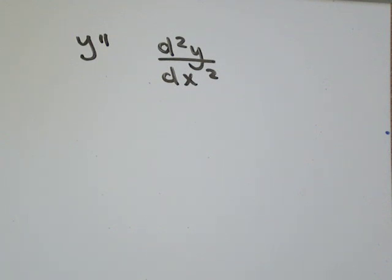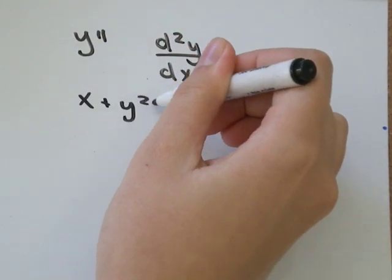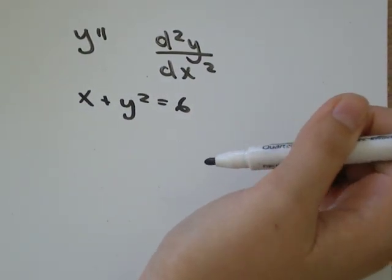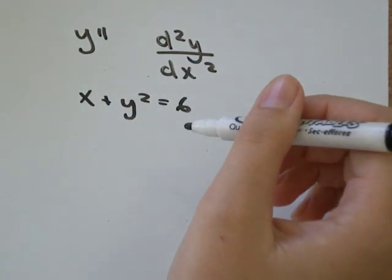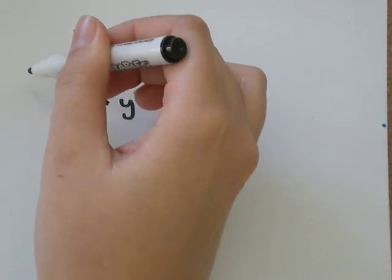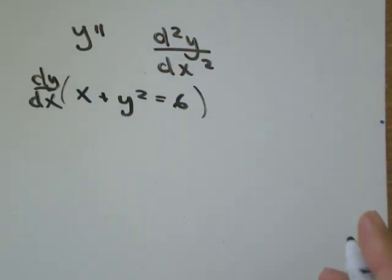So let's do a question together. Let's do x + y² = 6. So the first thing I'm going to do is take dy/dx of each side. So I'm just going to use implicit differentiation.